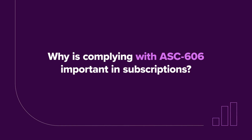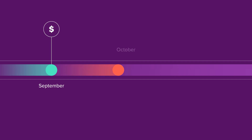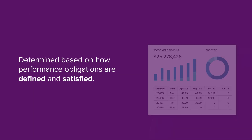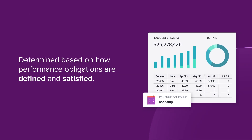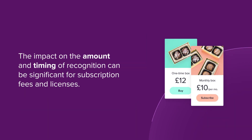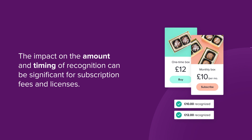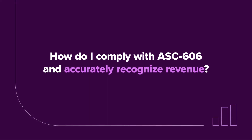Why is complying with ASC-606 important in subscriptions? This standard greatly changed how subscription-based businesses recognize revenue and the associated costs, which are recognized over the estimated life of a subscriber's contract. To remain compliant, revenue cannot be recognized immediately, but rather deferred until the contractual obligations are satisfied. However, this gets more complicated when customers upgrade, downgrade, or make contract modifications. For companies with subscription fees and licenses such as software and direct-to-consumer businesses, the impact on the amount and timing of recognition can be significant.